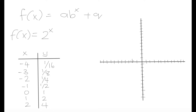Let's start plotting. When x = -4, that's 1, 2, 3, 4 units to the left, and y = 1/16, which is very close to 0 — somewhere around here. When x = -3, y = 1/8, so again less than 1, slightly higher than the previous point. When x = -2, y = 1/4, just a little bit higher. And when x = -1, y = 1/2, slightly higher again.